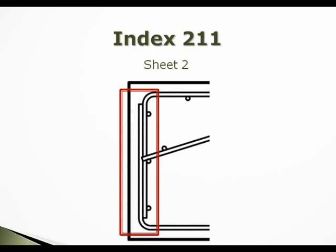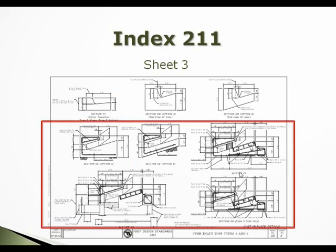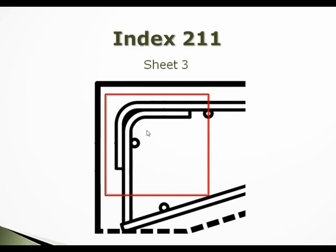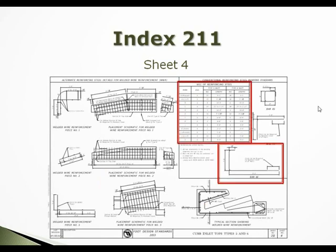The change is to the vertical legs — specifically, the overlapping of the vertical legs. Still in index 211, sheet 3, these details were revised, and again that is the overlapping. The 4.5 inch bend to bar 4E was added. Still in index 211, sheet 4, we added the 4.5 inch bend to bar 4E in the detail, and it was also included in the bill of reinforcing steel table.